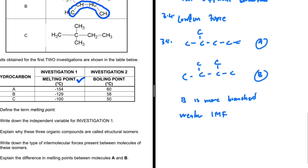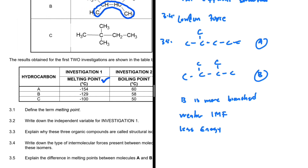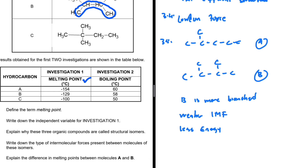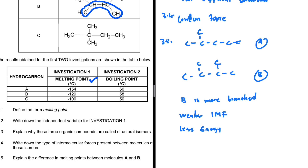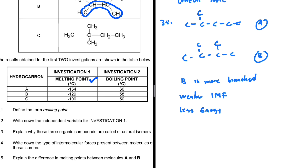Because compound B has weaker intermolecular forces, less energy is required to overcome them. As a consequence, compound B will have a lower melting point and a lower boiling point compared to compound A. If you have weaker intermolecular forces, you have a lower melting point, a lower boiling point, but a higher vapor pressure.